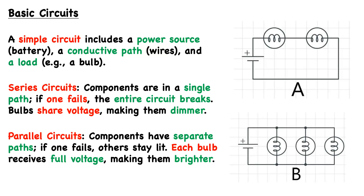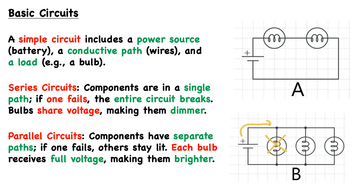In parallel circuits, components have separate paths. If one component fails, the others will stay lit. And in the context of a circuit powering light bulbs, each bulb receives full voltage, which makes them relatively brighter. In diagram B, we can see a simple example of a parallel circuit with three bulbs, all in parallel with separate paths. If the leftmost bulb were to fail, current still flows around the circuit, and each path being independent means the other bulbs remain powered. This is the main and fundamental difference between series and parallel circuits.